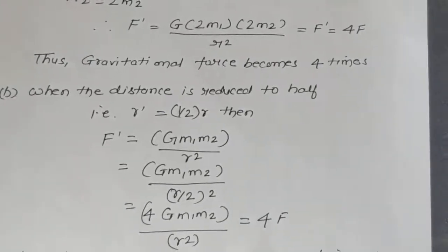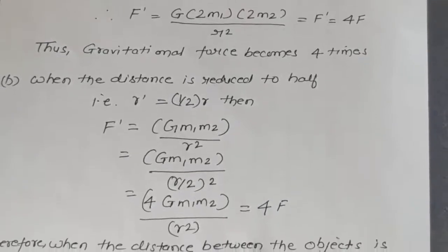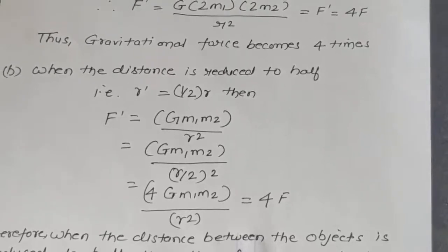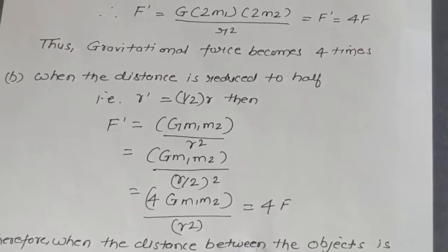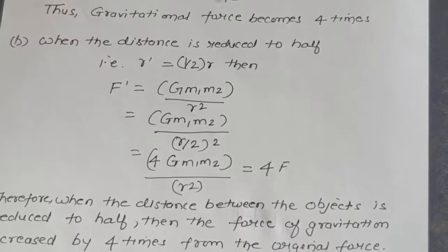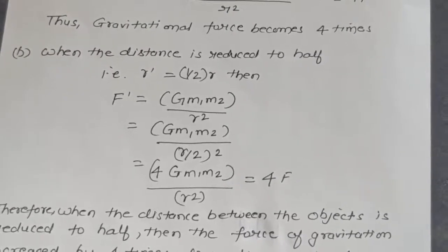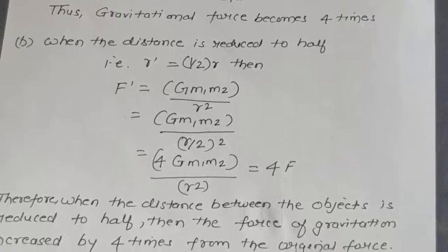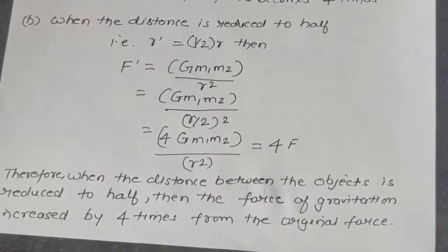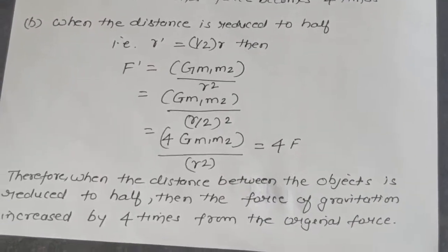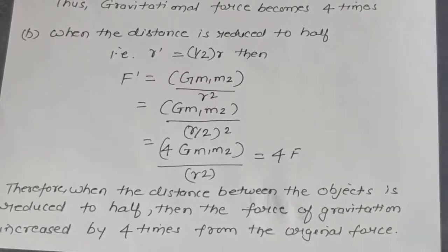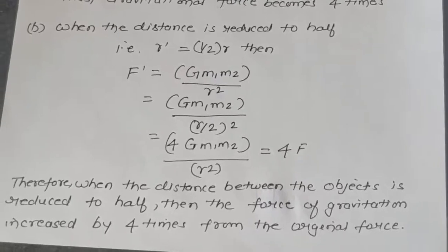For the second case, when the distance is reduced to half (R' = R/2), then F' = G·M1·M2 / (R/2)² = G·M1·M2 / (R²/4) = 4G·M1·M2 / R² = 4F. Therefore, when the distance between the objects is reduced to half, the gravitational force increases by 4 times from the original.